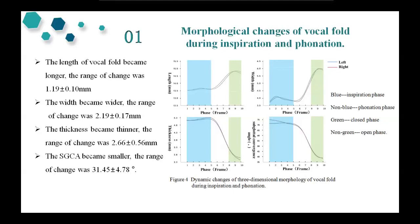The length was about 4.0 mm and the range of change was about 2.2 mm. The thickness became thinner with a range of change of about 2.7 mm. The subglottal convergence angle became smaller with a range of change of about 32 degrees. In Figure 4, blue represents inspiration phase, orange represents phonation phase, grey represents closed phase, and light grey represents open phase.